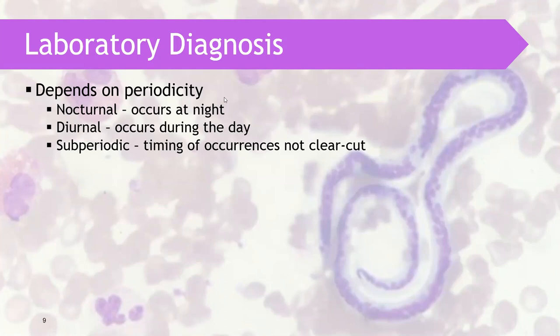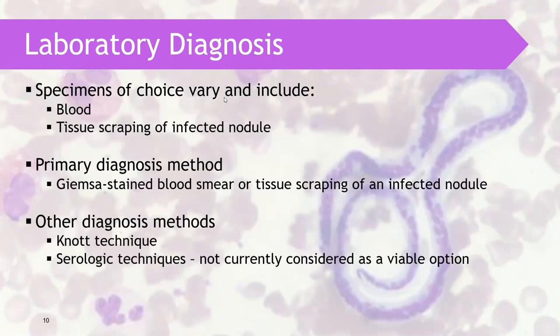In order to detect the presence of this parasite, we have to collect samples at the appropriate time because of periodicity. When we say nocturnal, it occurs at night; diurnal, during the day; subperiodic, the timing of occurrence is not clear — it can be morning or evening. Later we will differentiate who are nocturnal, diurnal, and subperiodic.